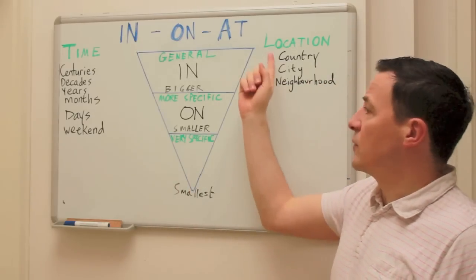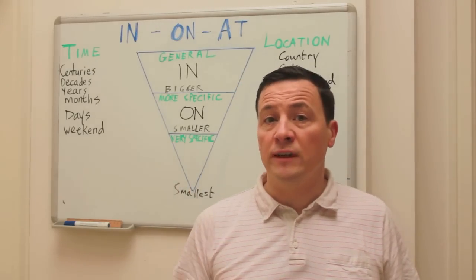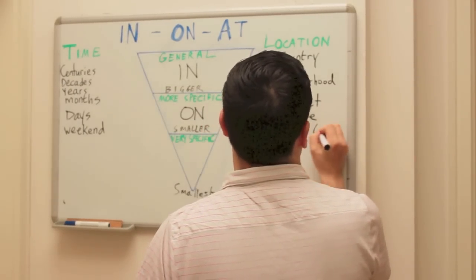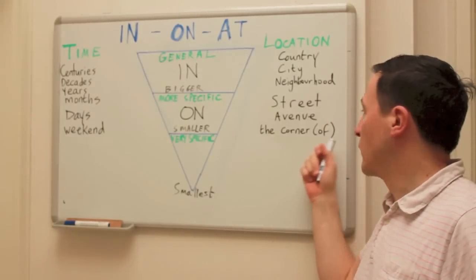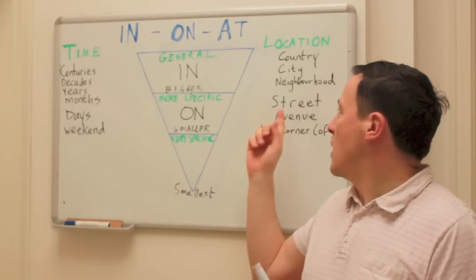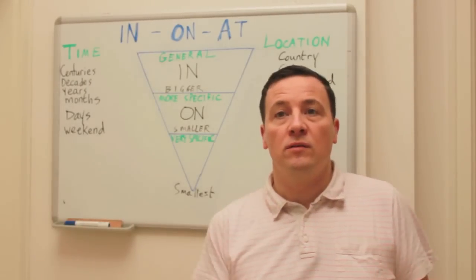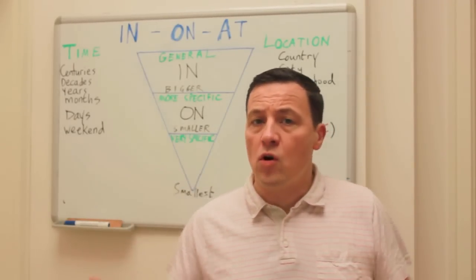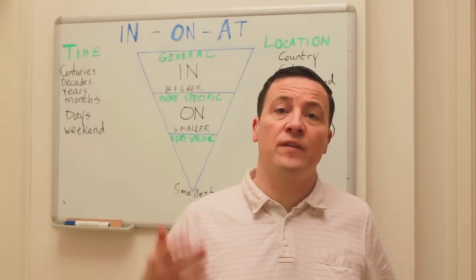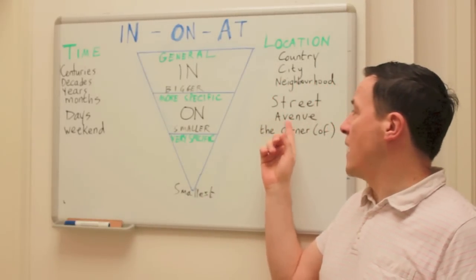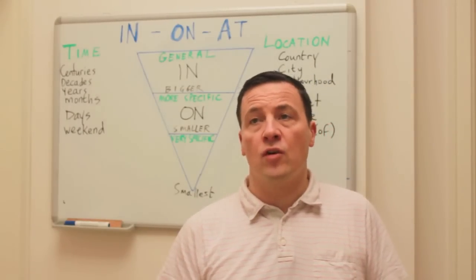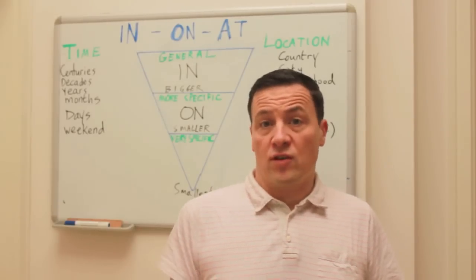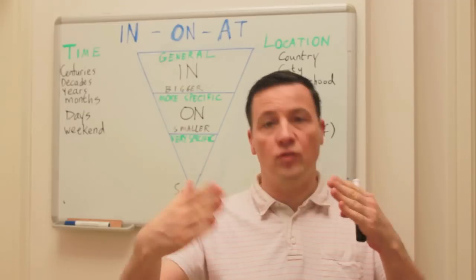The same for location — when you're talking about a street or avenue, we would say 'on'. You can also say on the corner of. So for example, in London, many tourists go shopping on Oxford Street. Or in New York, many people go shopping on Fifth Avenue. So 'on' with a street and 'on' with an avenue. And you could also say: let's meet on the corner of Unterlenlinden and Friedrichstrasse.